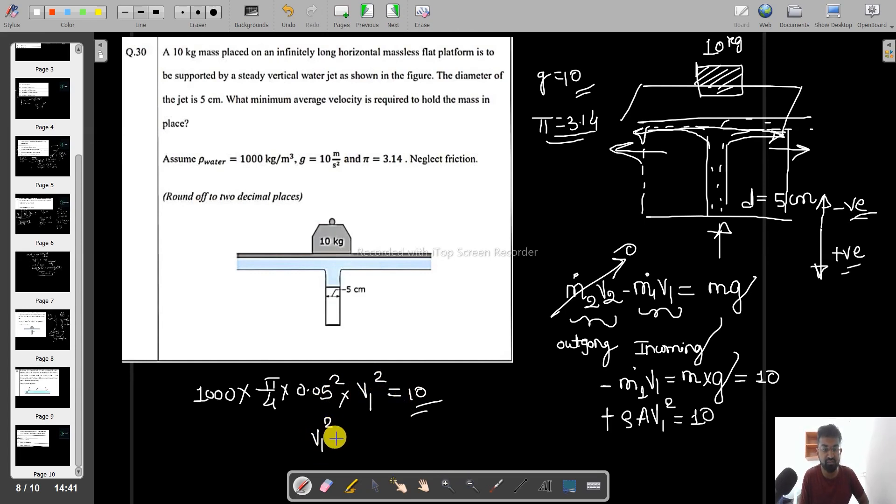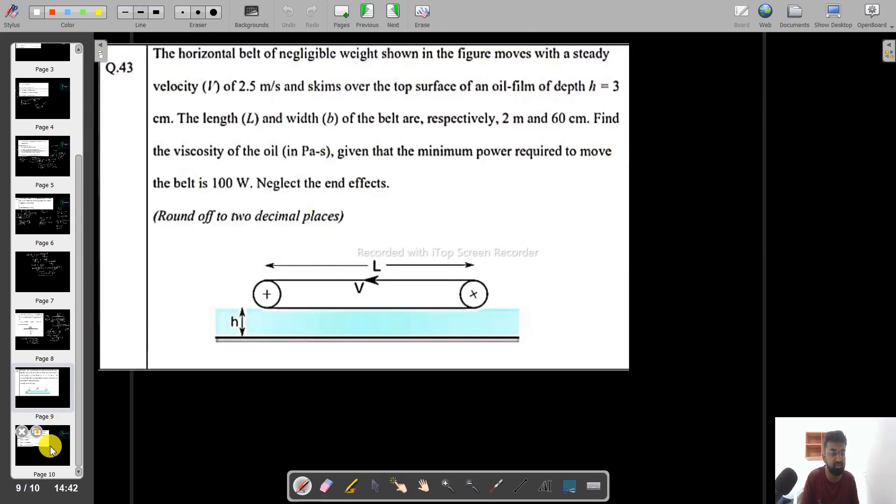So from this, you will get the required answer. V1 square equals to. So do the calculation and get the final answer. I have the final answer as 7.138 meter per second. So that will be the value of the velocity. So again, I am telling you, I am not sure about the calculation, but you can check it out. The concepts are same only. So let us talk about the next question.